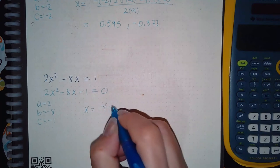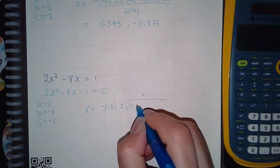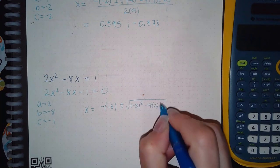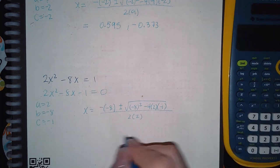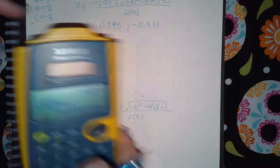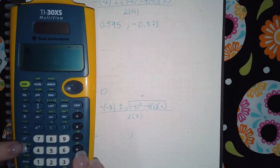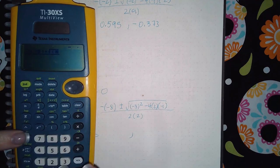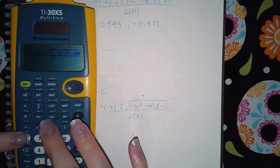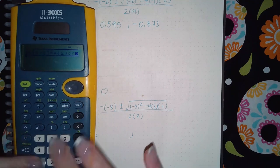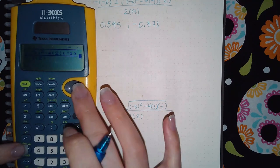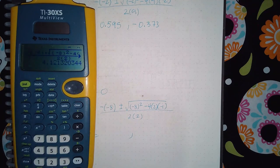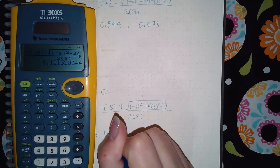So negative b plus or minus square root of b squared minus 4 times a times c, all over 2 times a. And so again I'm going to plug both of these in the calculator. So negative negative 8 plus square root of negative 8 squared minus 4 times 2 times negative 1, all over 2 times 2. And I'm going to put the double arrow here so it can automatically change it into a decimal. I get 4.121.